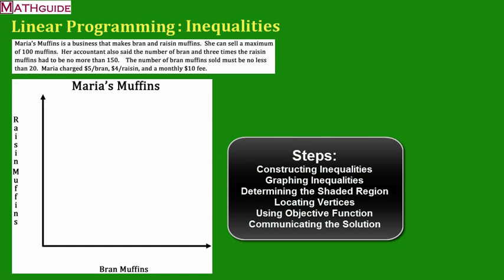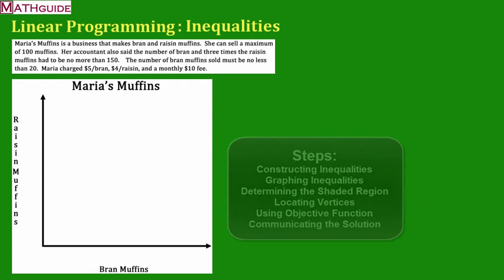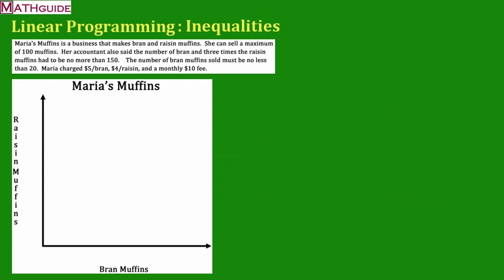The first part is developing the inequalities. We need to figure out what inequalities we're going to use. When we make inequalities, there are some steps that we have to take right before that. For instance, we have to declare what the variables are. I have to figure out what is x, because I'm going to use x and y for this problem. We have to figure out what x is going to stand for, what's y going to stand for.